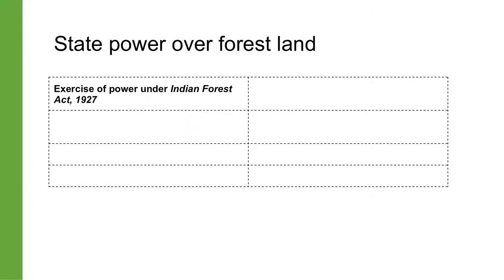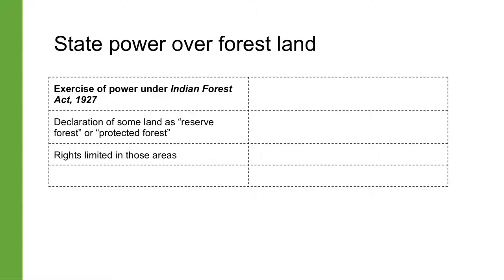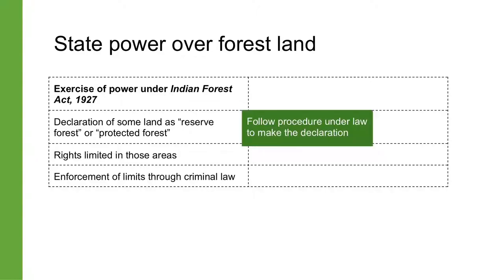The Indian Forest Act 1927 gives state governments power over some forest land. This power is exercised by following a process to classify some land as reserve forest or protected forest. Once some land is declared as a reserve forest or a protected forest, it limits the rights of others — that is, the people who are not the state — to use that land. These limits are enforced through criminal law. A state government can restrict how private persons are using forests by declaring that land to be a reserve forest or a protected forest, and such a declaration has to follow the procedure laid out under the law.